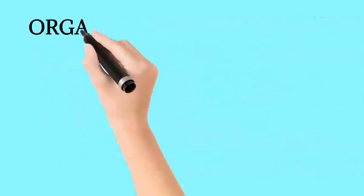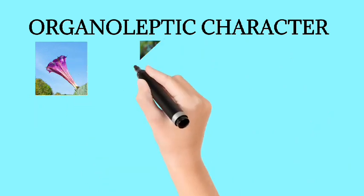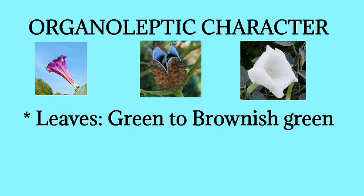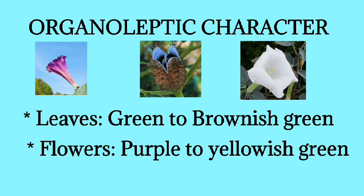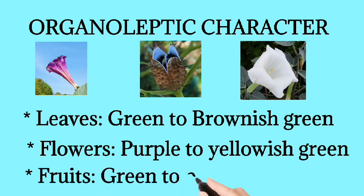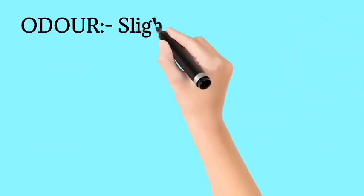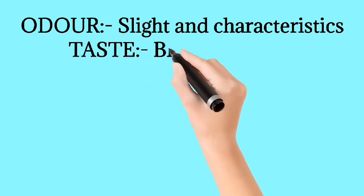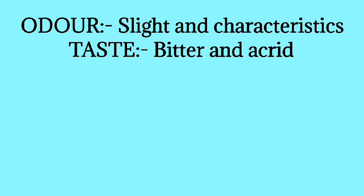Now we talk about organoleptic characters. Color: leaves are green to brownish green; flowers are purple to yellowish green; fruits are green to brown. Odor: its odor is light and characteristic. Taste: its taste is bitter and acrid.